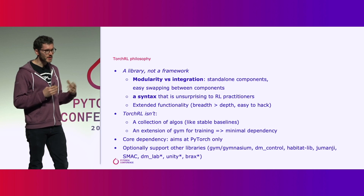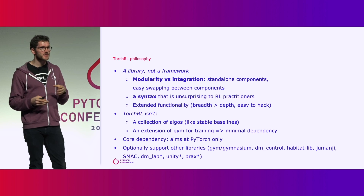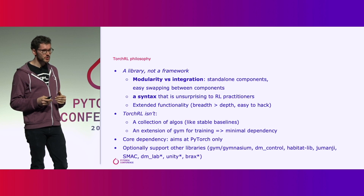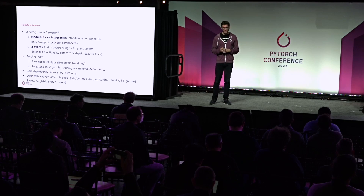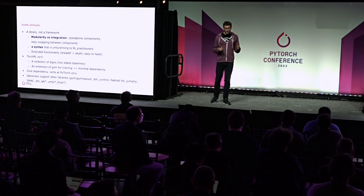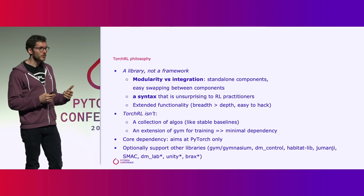We also wanted the syntax to be totally unsurprising to RL practitioners, since sometimes libraries rename things to suit their own purposes. We wanted extended functionality, privileging breadth over depth, and a library almost entirely written in Python so it was easy to hack. What we didn't want was just a collection of algorithms, or a library that was simply an extension of Gym — because we wanted to also support users not using Gym, who were using other simulators or no simulators at all.